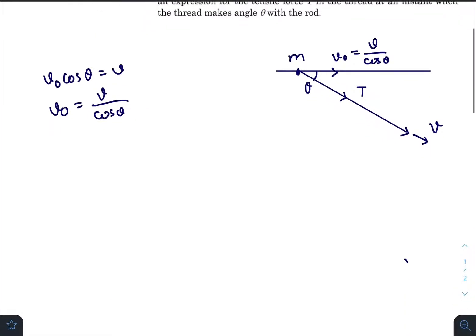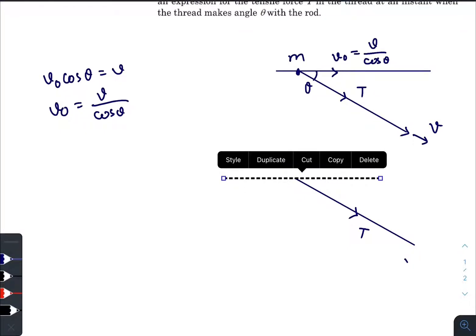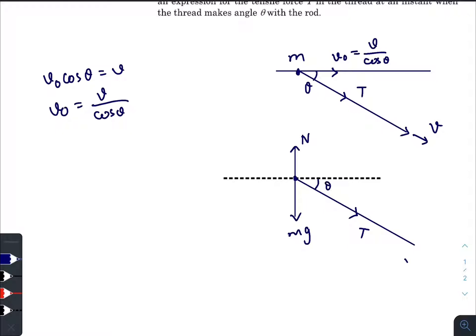Let us also draw the free body diagram of the particle. This one is T, this is the horizontal line. Here a normal force is acting, Mg is acting downwards, tension T, this angle is theta.